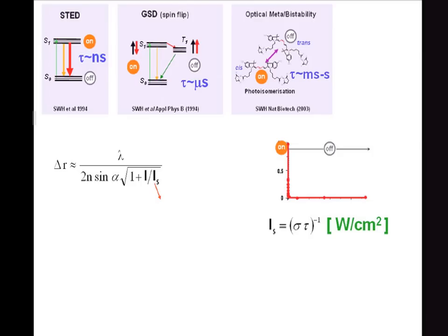There are even other options. You can use cis-trans photoisomerization to play this on-off game. If the lifetime of the states is even longer — milliseconds or seconds — then you can break the diffraction barrier at very low light levels, even with a power level supplied by an LED. This is not an intensity game; this is a transition game. Make a definite transition from one state to the other in order to be able to separate molecules that reside within the diffraction barrier.